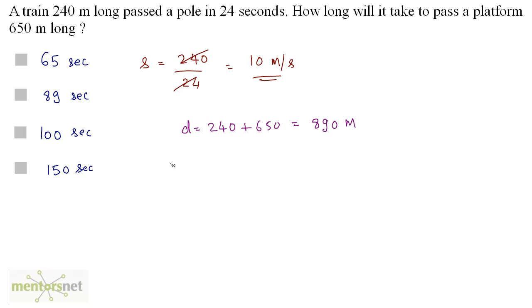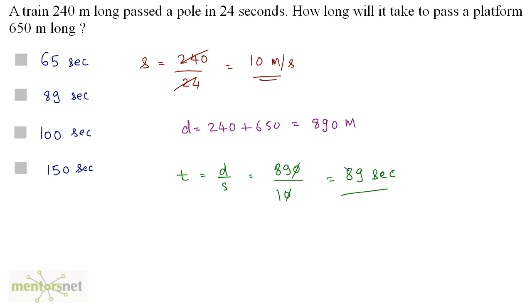Now we calculate the time. Time equals distance upon speed: 890 divided by 10 equals 89 seconds. Option B is the correct answer.